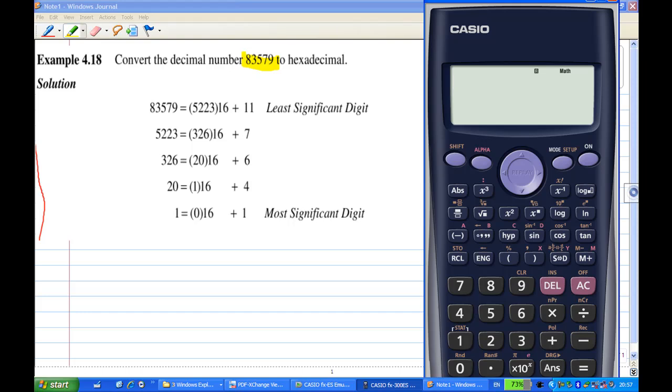If your calculator does not have base-n calculation, then you can keep on dividing by 16 by doing this mixed calculation. For example, you press 83579 divided by 16 equals. You get a fraction. Now I convert this to a mixed fraction. You get 5223 and 11/16.